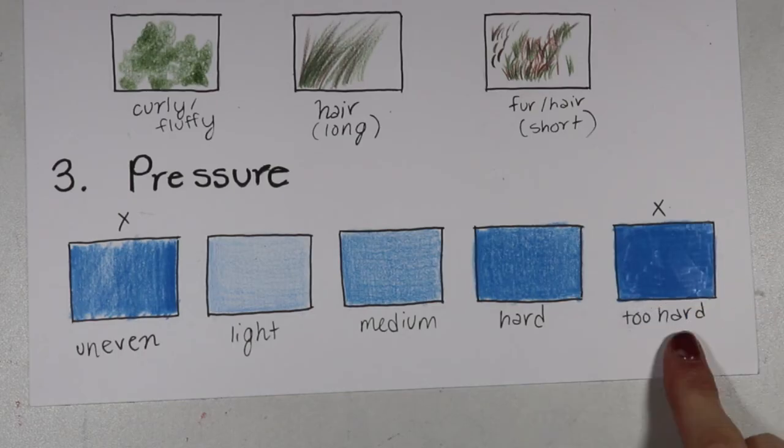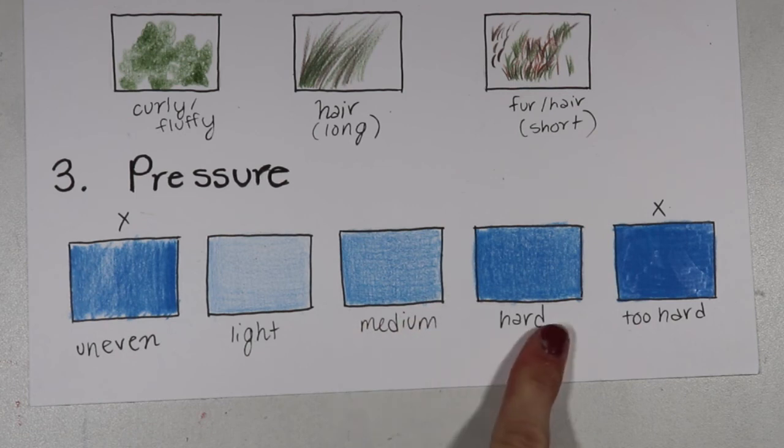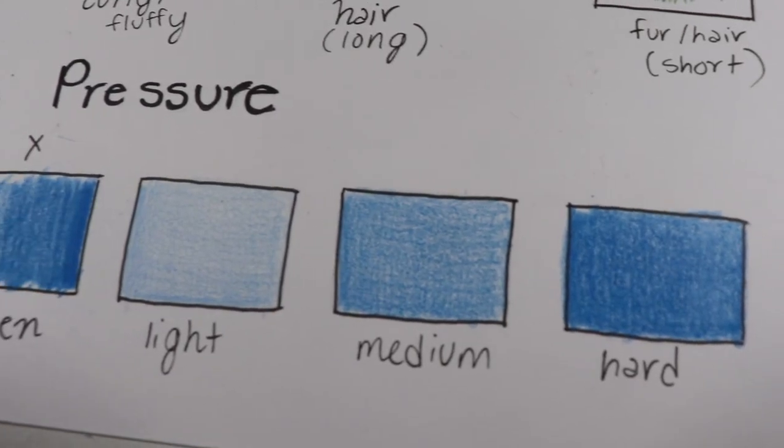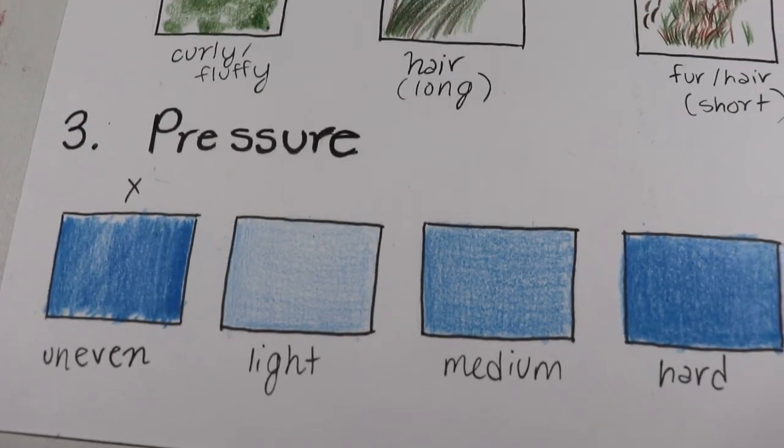You can get smooth coverage like this by building up maybe a normal medium or hard pressure in multiple layers until you get the result that you'd like. You can really see the difference in the pencil pressure from light, medium to hard.